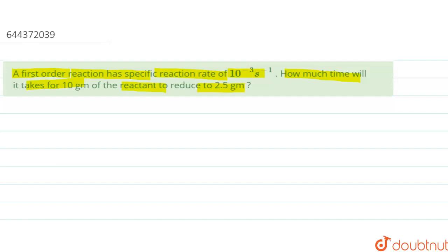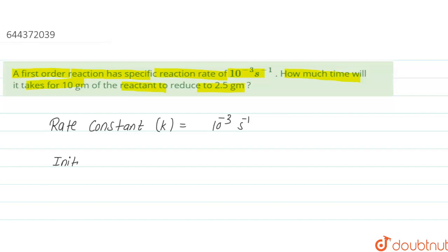So in this question we are given the specific rate, which means the rate constant. We can write the rate constant K of the reaction, that is equal to 10 raised to the power minus 3 second inverse. And we are given the initial mass of the reactant, represented by A naught, that is 10 grams.